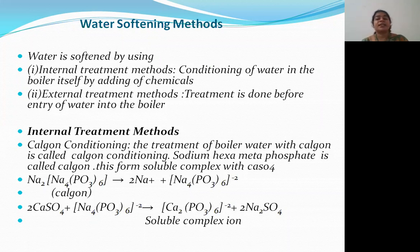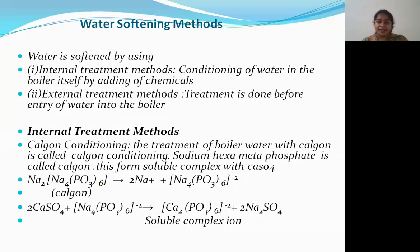First, let's discuss the internal treatment method. In the internal treatment method, we remove all the hardness-producing salts from the water after feeding water into the boiler for steam generation. This is done by three ways: Calgon conditioning, phosphate conditioning, and colloidal conditioning.